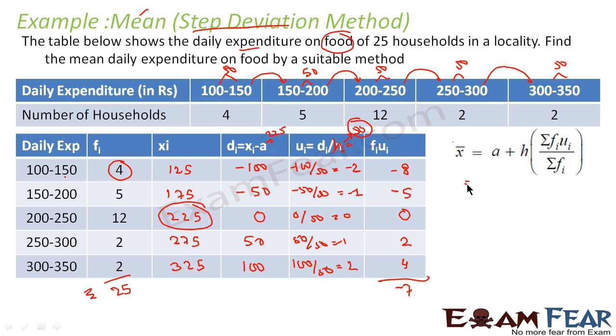Now we use the formula. This is the formula. This is nothing but a, what is the value of a? 225. 225 + h is what? 50. So 50 × Σfiui is minus 7, divided by 25. So if you solve this, this becomes 225 minus 14, that is 211.